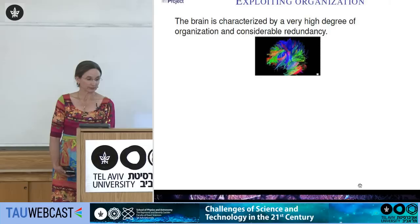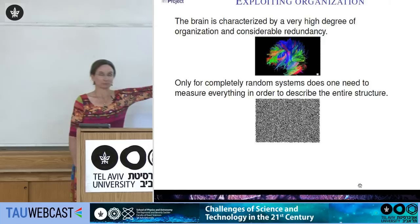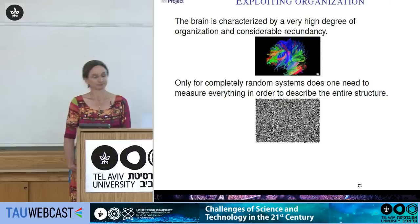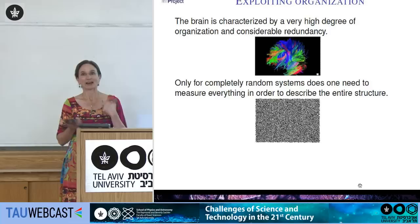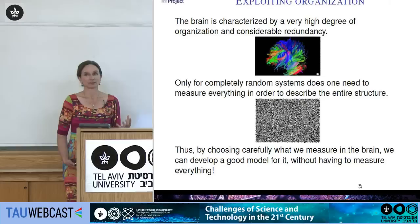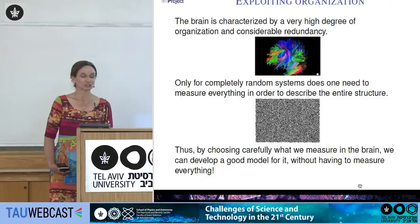If you had a completely random system — where you just knew that a pixel was either white or black with some probability — you'd have to measure every single pixel. Whereas in the brain, because of its structure, you don't have to measure every single thing to know a lot about it. We have to choose carefully what we measure in order to come up with a reasonably good approximation of the structure.